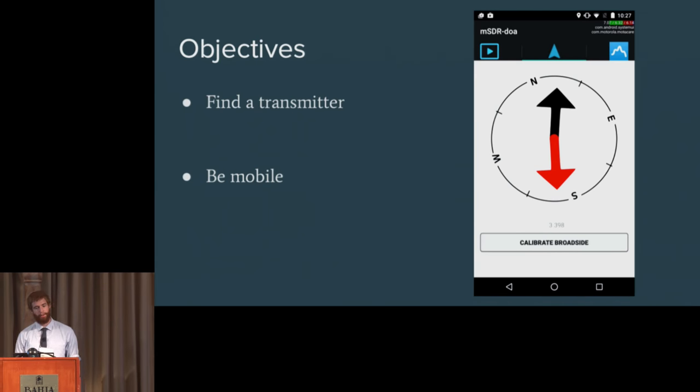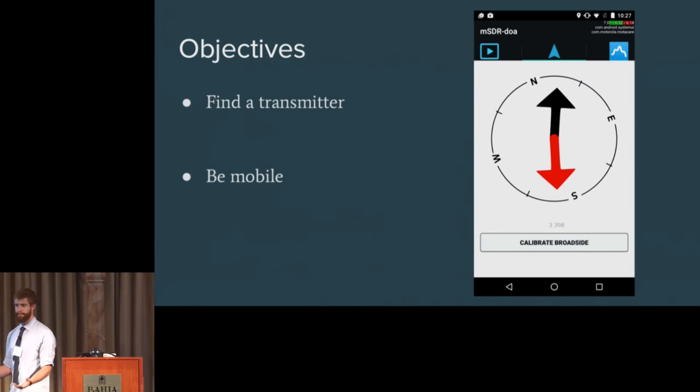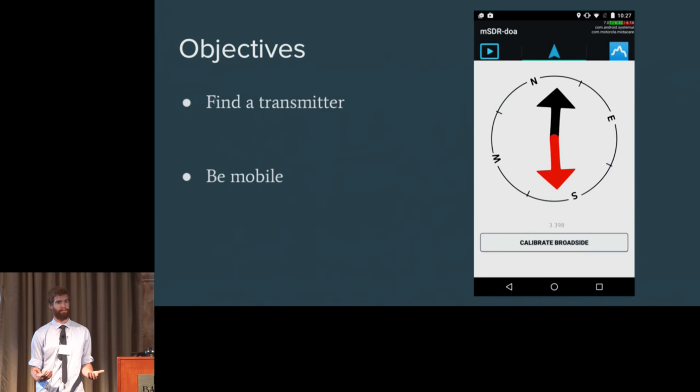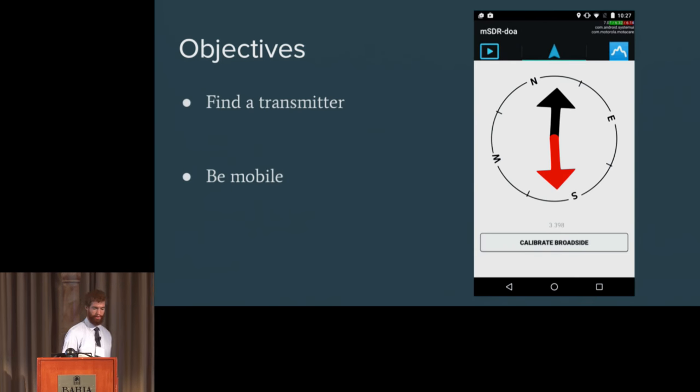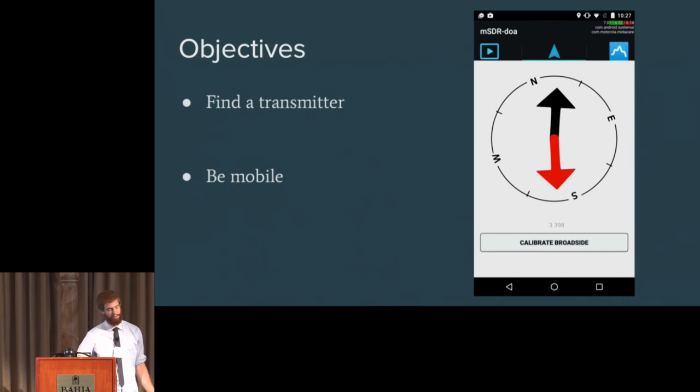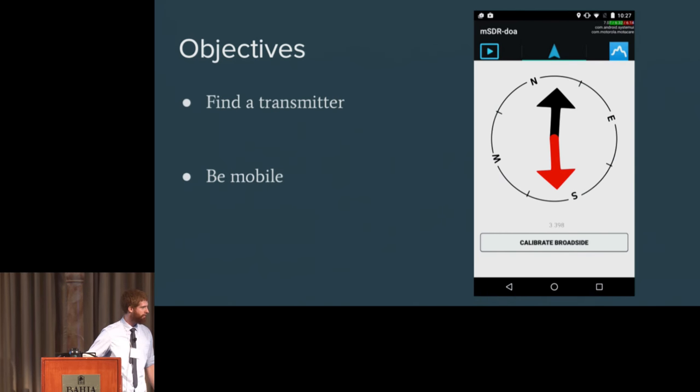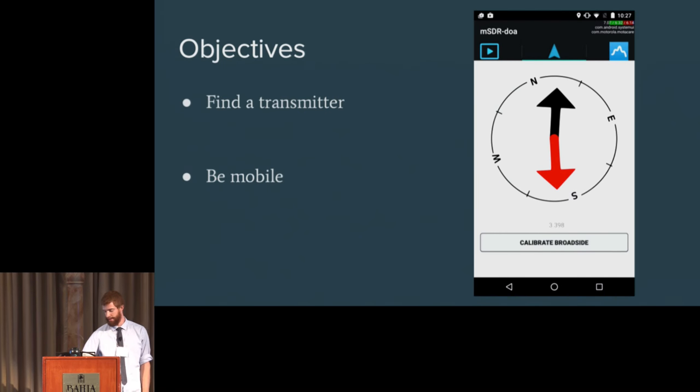Dana Sorensen and Todd Moon are here with me. They worked on this project for direction of arrival analysis, or angle of arrival. We started out about a year ago and we wanted to keep this simple. We just had a couple of objectives: find a transmitter and be mobile. This is a picture of a teaser of what an Android app might look like that does this kind of analysis.